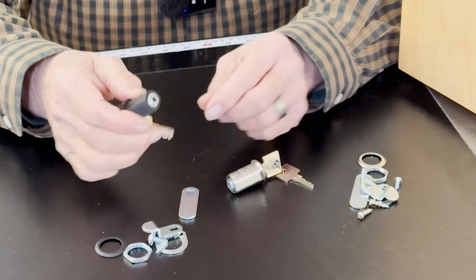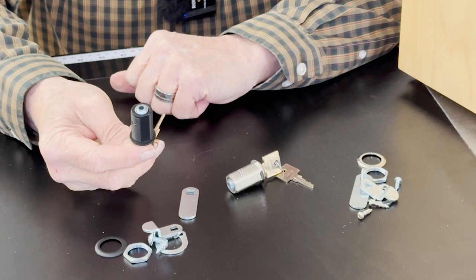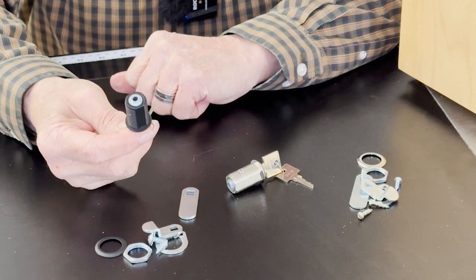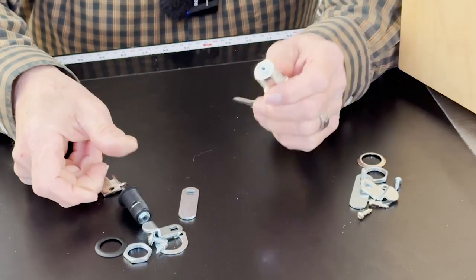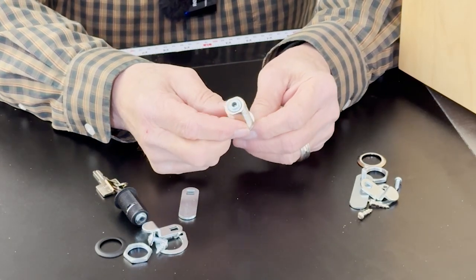The disc tumbler lock from Olympus comes in two colors. This is a, they call it a US-19. Black is what US-19 is. And then a 14A chrome. Those are the colors the locks available in.